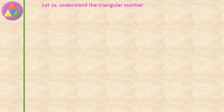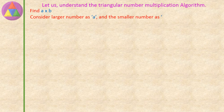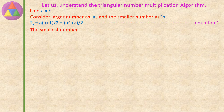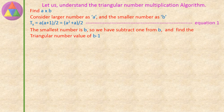Let us understand the triangular number multiplication algorithm. Find a into b. Consider the larger number as a and the smaller number as b. Equation 1: Ta equals a into (a plus 1), divided by 2, equals (a squared plus a) divided by 2. The smallest number is b, so we subtract 1 from b and find the triangular number value of (b minus 1). Equation 2: T(b−1) equals (b minus 1) into b, divided by 2, equals (b squared minus b) divided by 2.